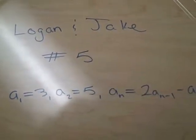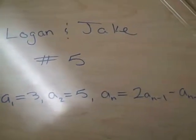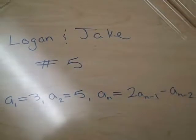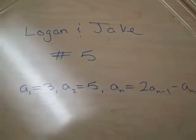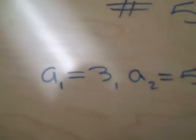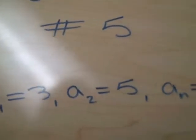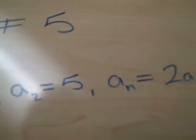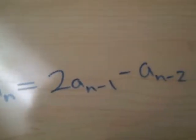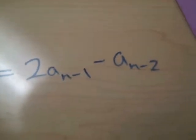This is Logan and Jake doing problem 5. The problem is: A1 equals 3, A2 equals 5, and the recurrence equation is AN equals 2·A(N-1) minus A(N-2).